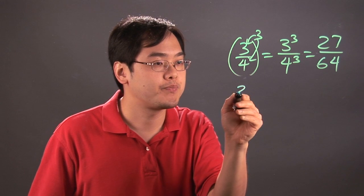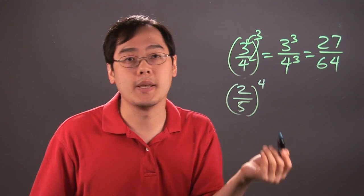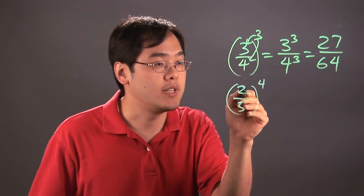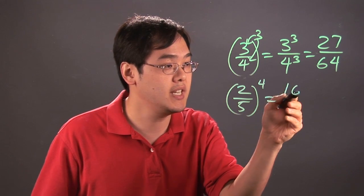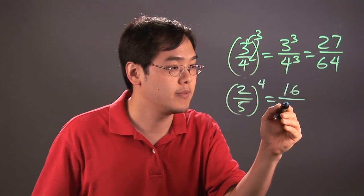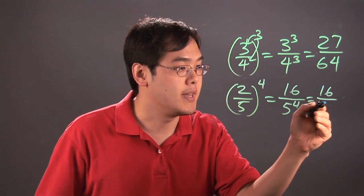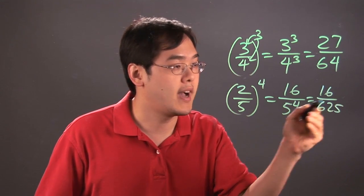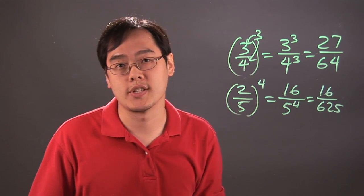Now if you have 2/5 raised to the fourth power, same kind of idea. Take the two and the five, and each of them are raised to the fourth power. 2 to the fourth is 16, and 5 to the fourth is 625. So 2/5 to the fourth power is 16 over 625.